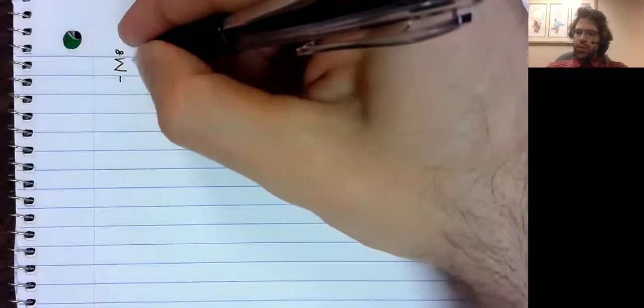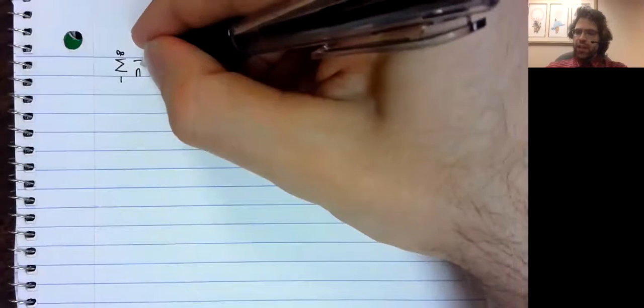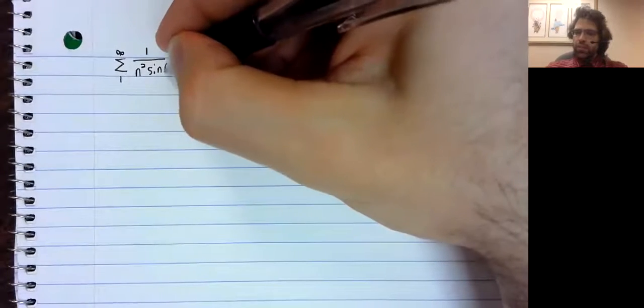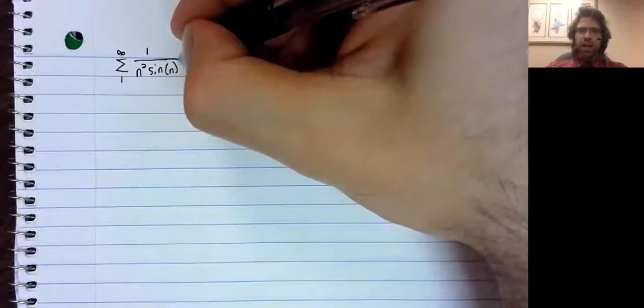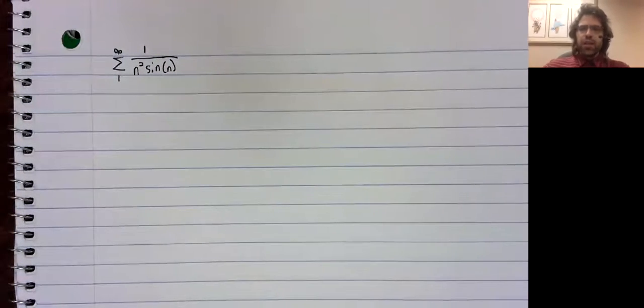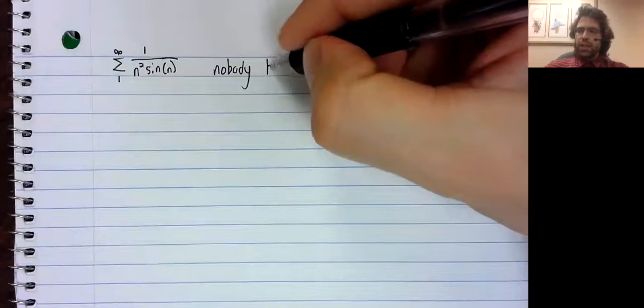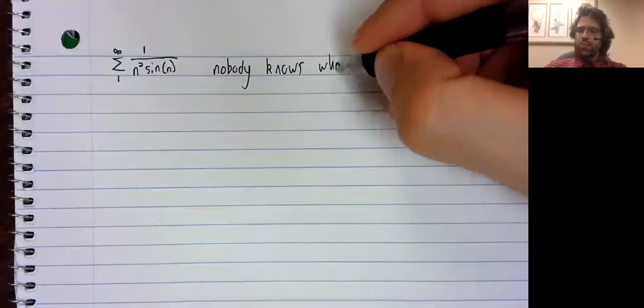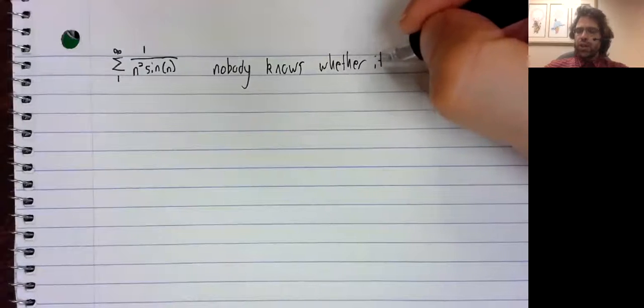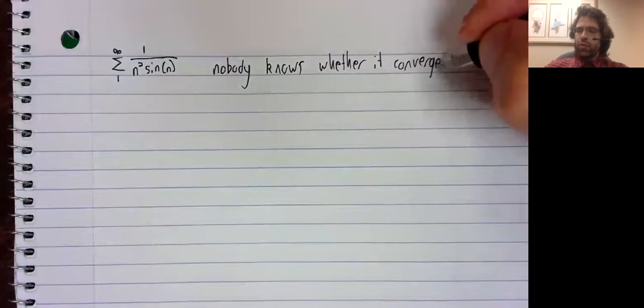For example, the sum from one to infinity of one divided by n squared times sine of n. That's an easy series to write down, and yet nobody knows whether it converges.